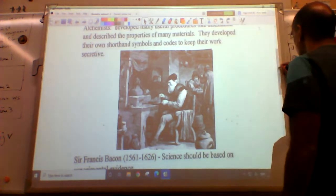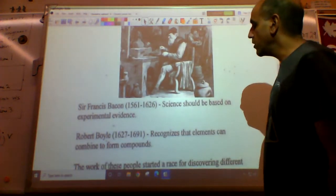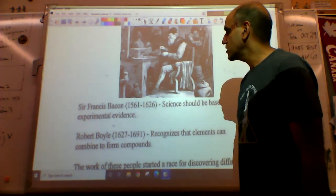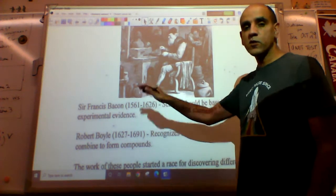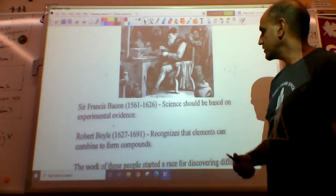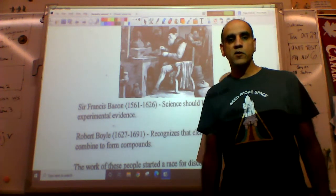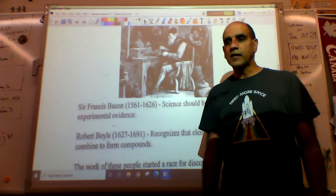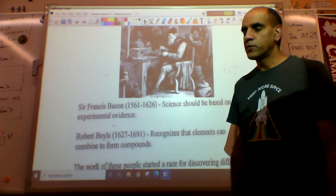The alchemists. The next person to come along in chemistry is Sir Francis Bacon. And you don't need to know the dates. It's nice to know some of the names. Sir Francis Bacon said science should be based on experimental evidence. And he died for his beliefs.